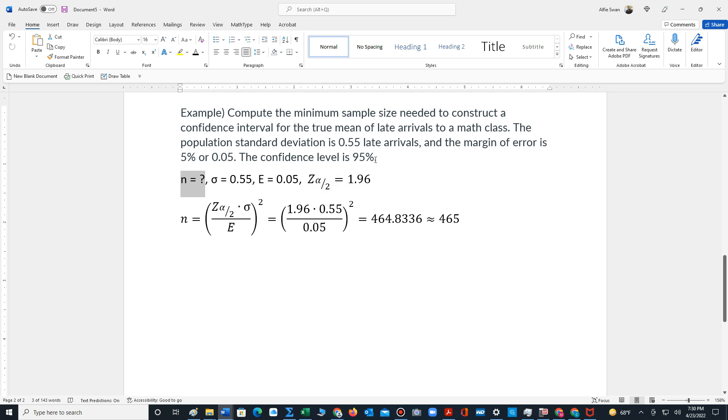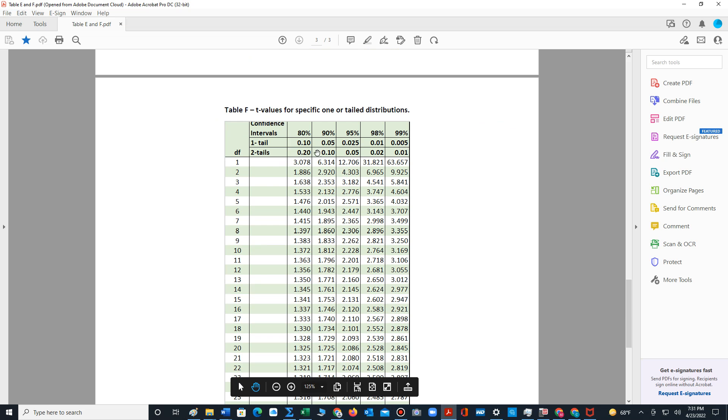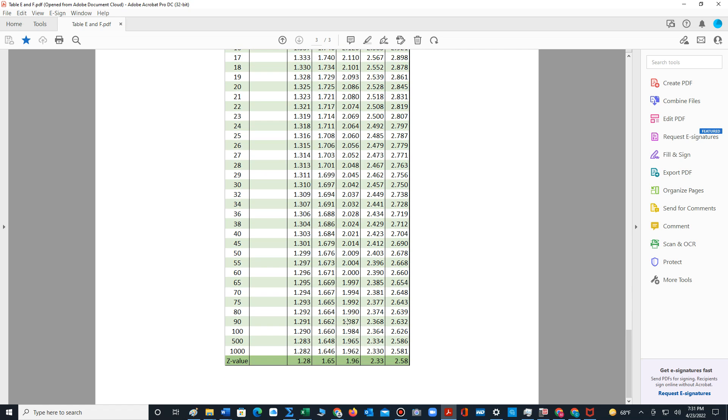The z value we can look up using table F. We look for 95%, scroll all the way down to the z value at the bottom of the table. It's 1.96.